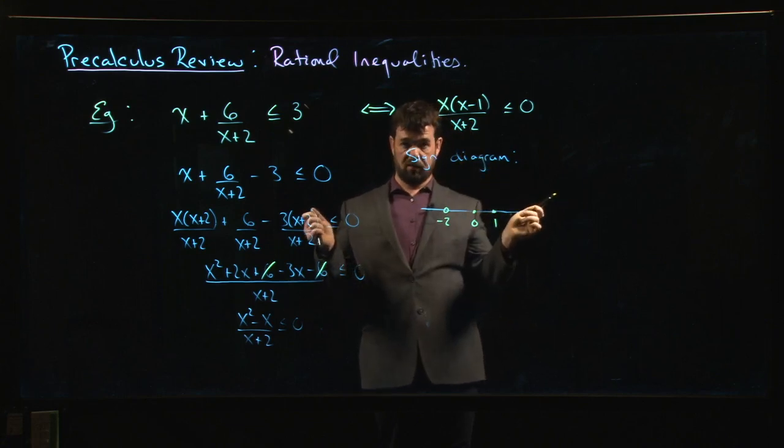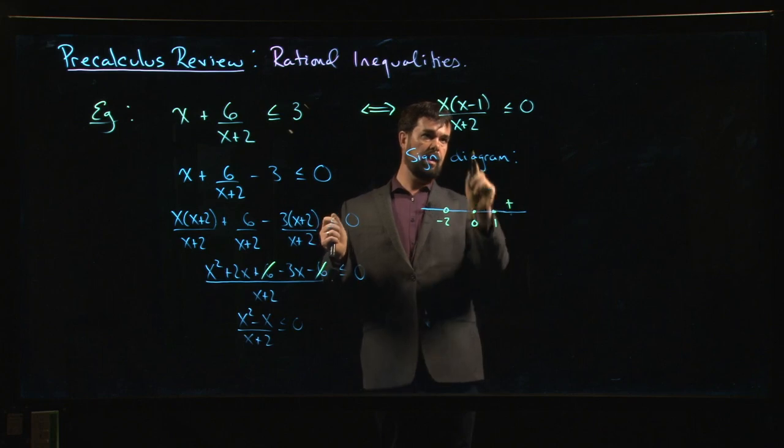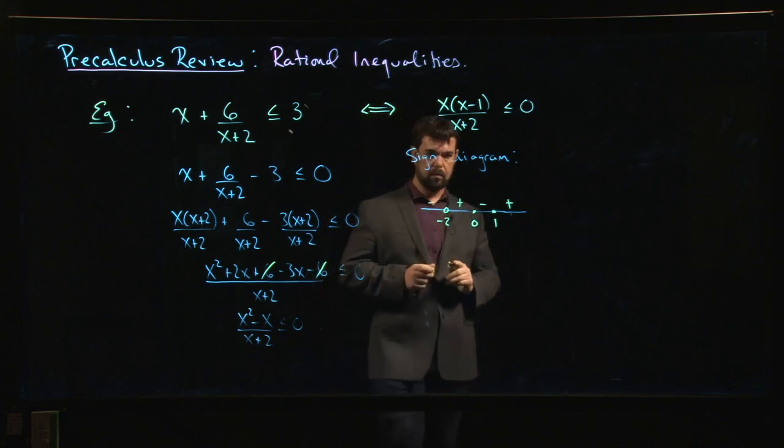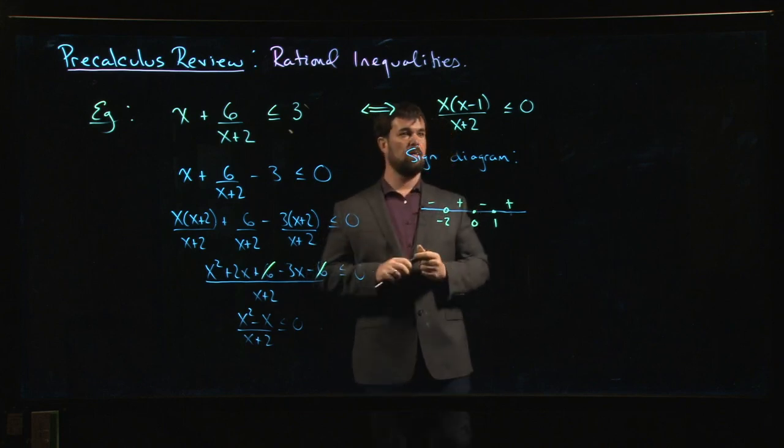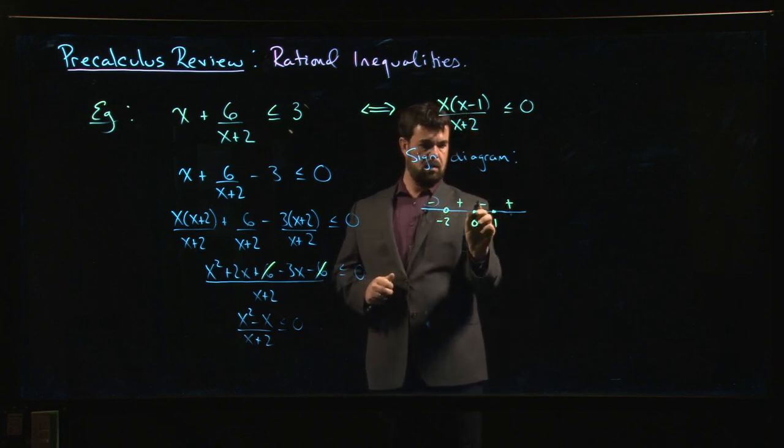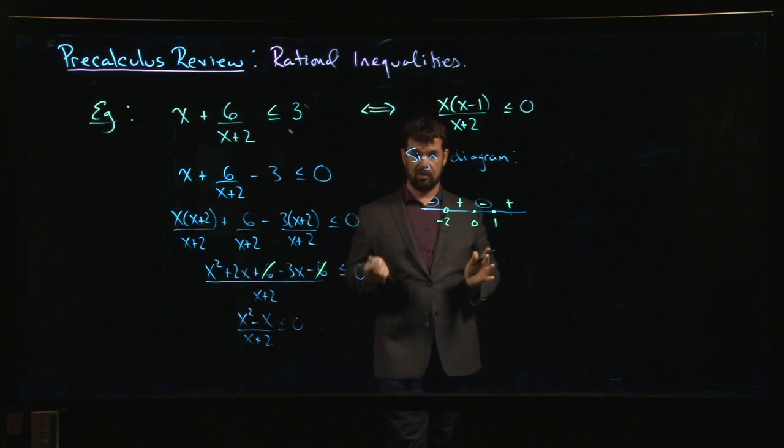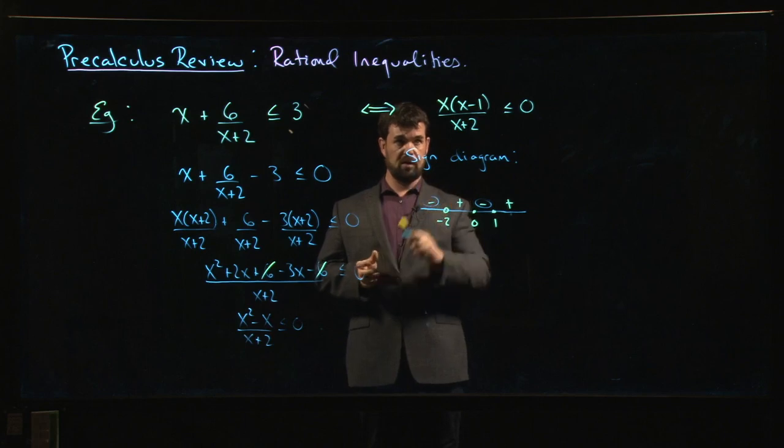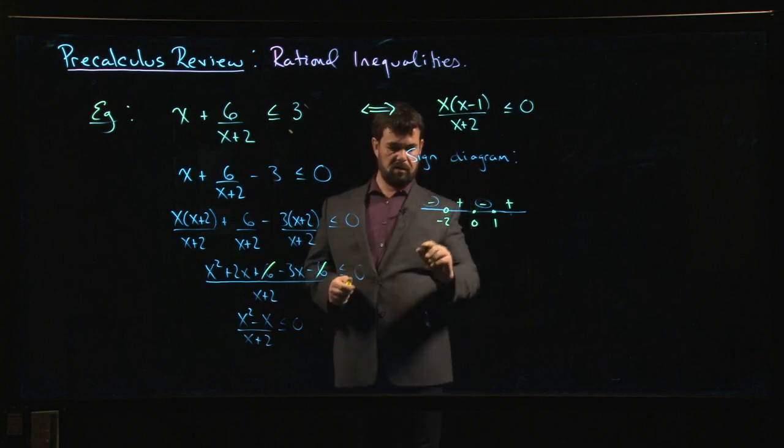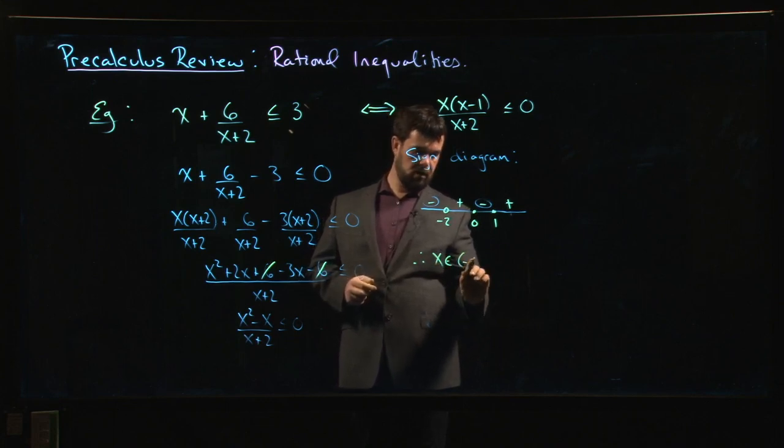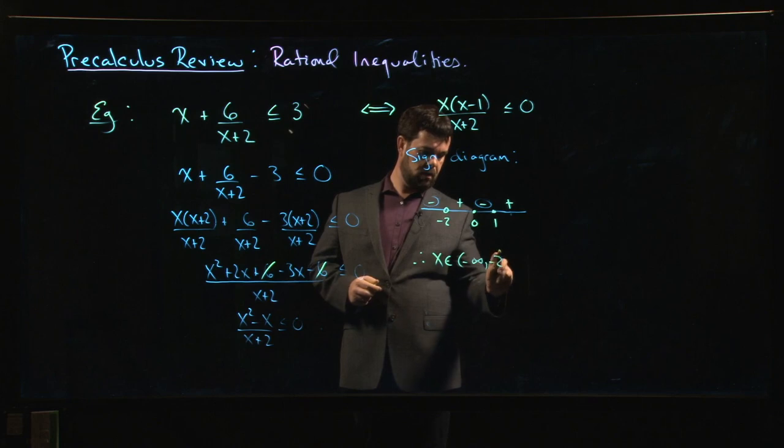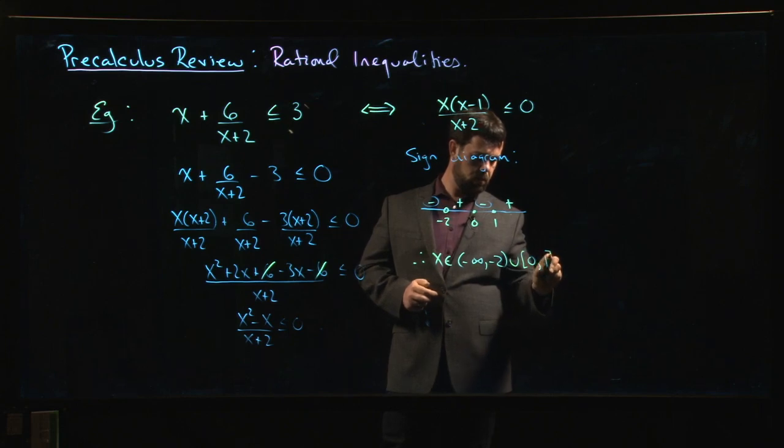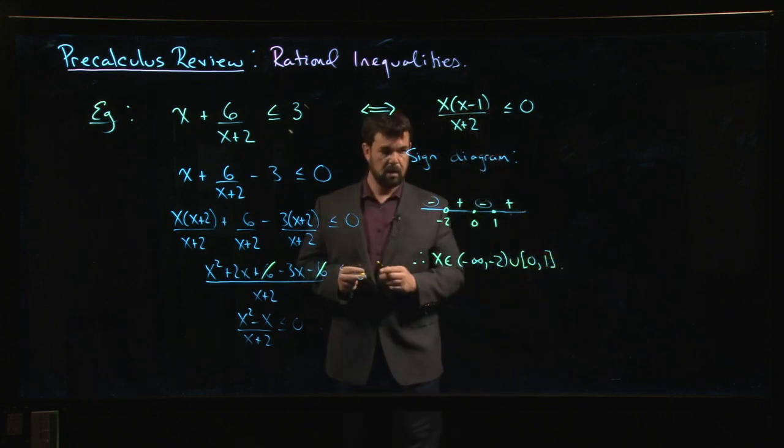If x is bigger than 1, for example if x is 2, everything is positive. And then I get a sign change at each of those points. Okay, now I want less than or equal to 0, so I'm looking for the places where my function is either negative or 0. I can't include minus 2 because it's not, you know, I have an asymptote there, it's undefined. So that means that x should be either between minus infinity and minus 2, or between 0 and 1. And that gives you the solution.